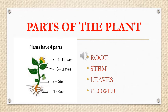My dear children, now we are going to talk about parts of the plant. Basically, plants have four parts: they are root, stem, leaves, and flower.